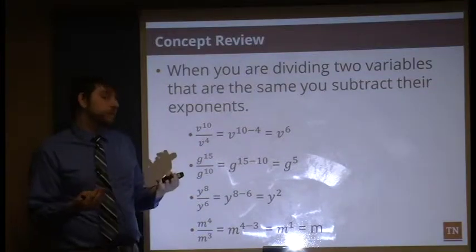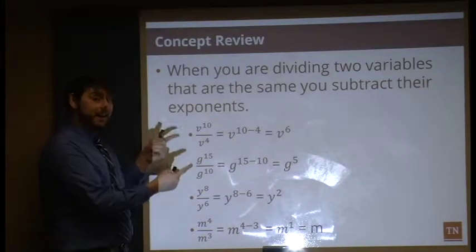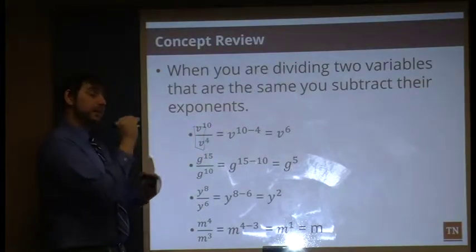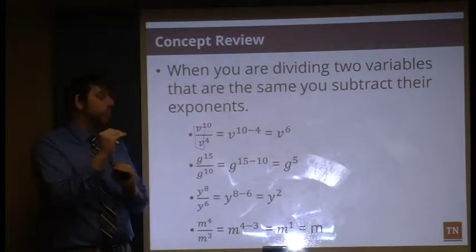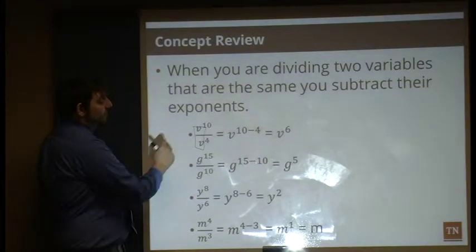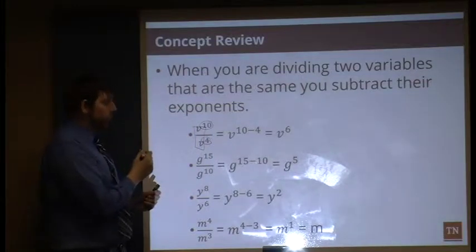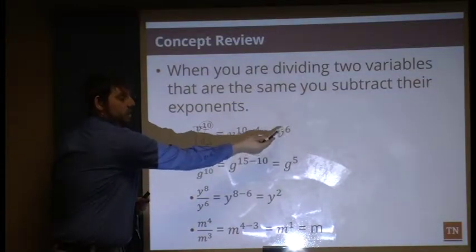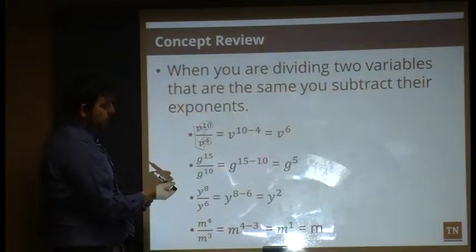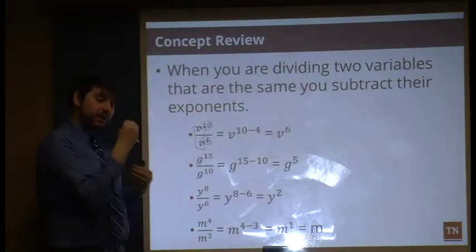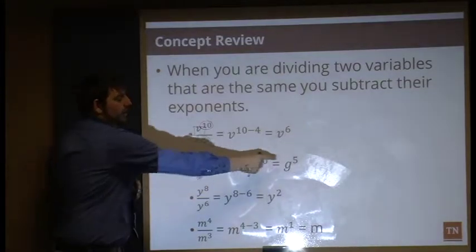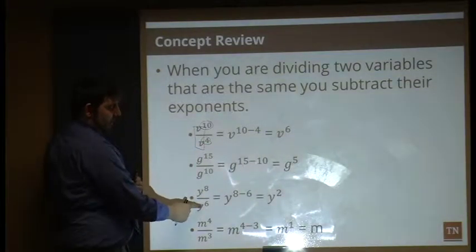First is division of exponents. If you have the same base — the same variable — on top and bottom in a division relationship, you can subtract those exponents. For example, V to the tenth divided by V to the fourth: ten minus four gives us six, so the result is V to the sixth. Same with G to the fifteenth over G to the tenth — fifteen minus ten gives us five.